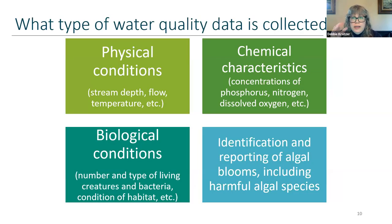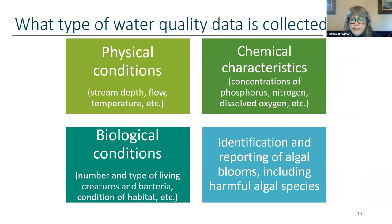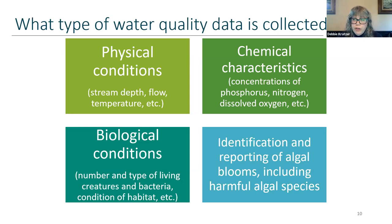What type of water quality data is collected? First, physical conditions of the water — stream depth, flow, and temperature. Biological conditions such as the number and type of living creatures, bacteria, and the condition of habitat. Chemical characteristics such as concentrations of nutrients and dissolved oxygen. And finally, identifying and reporting harmful algal blooms.